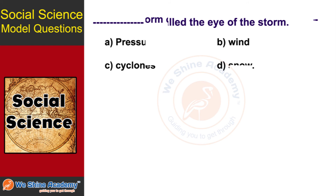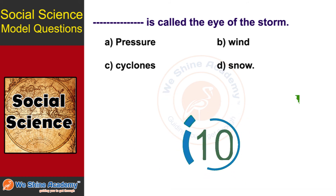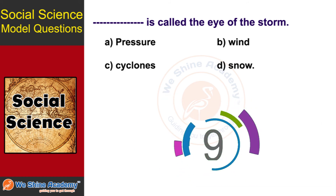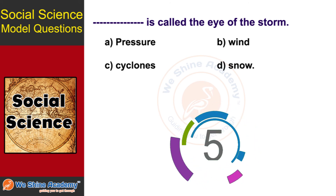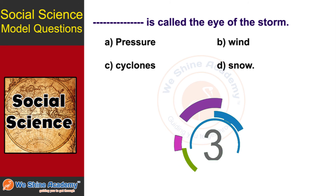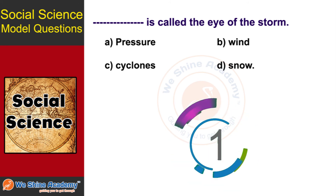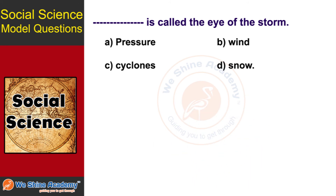The next question is: dash is called the eye of the storm. In 10 seconds, find the answer. The answer is Option C: Cyclones. The eye of the storm is associated with cyclones.